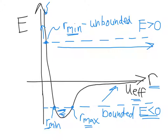We can also imagine a case where the total energy of the system is exactly equal to 0. In that case, the particles can actually go all the way out to infinity, but there is still a minimum approach distance enforced by the centrifugal potential. So this is an orbit that can just barely make it all the way out to infinity, but can never approach closer than some minimum value of r.